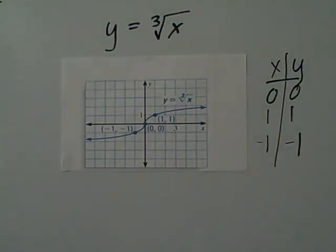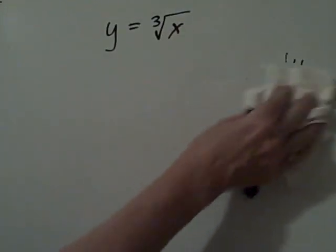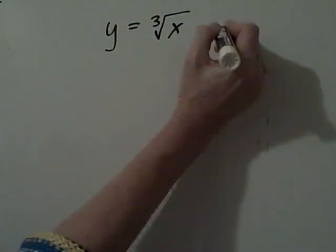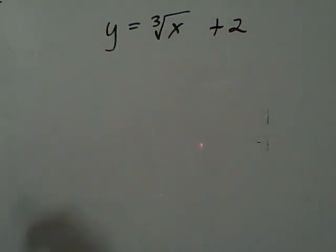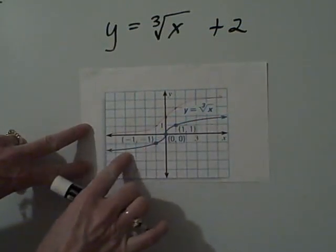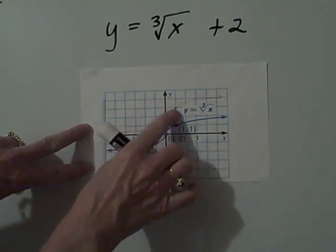The same thing is going to happen here as happened with our square root function. If we change the value in some way, the function, for instance if we add two to the outside, our graph will shift from the blue cubic root of x and it will shift up two spaces.